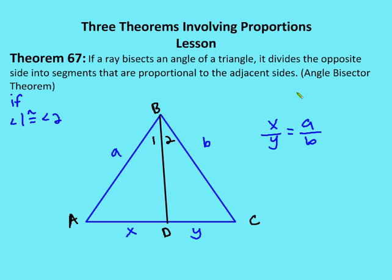The last theorem is called the Angle Bisector Theorem. What it says is if we have a ray — for example ray BD — that bisects an angle of a triangle, angle ABC, it divides the opposite side into segments that are proportional to the adjacent sides. So this ray divides the opposite side into segments AD and DC that are proportional to the adjacent sides AB and BC. So x is to y as A is to B, assuming angle 1 is congruent to angle 2.